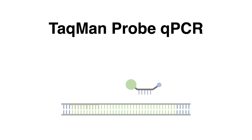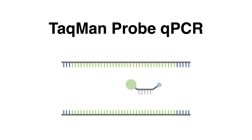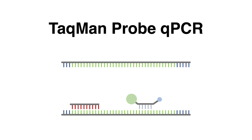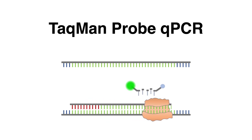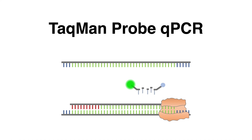In the TaqMan assay, short DNA probes are provided which are attached to a fluorescent reporter at the 5' end. The reporter activity is suppressed by the 3' quencher as long as they are in near proximity. The strands separate in the denaturation step. After this, the primers can bind and the TaqMan probes are designed to specifically bind in between the target sequence of the amplicon. The Taq DNA polymerase has a 5' exonuclease activity which will chew away the target-specific probe. Cleavage of the TaqMan probe separates the reporter from the quencher, which leads to the emission of a fluorescent signal that can be detected after each cycle.